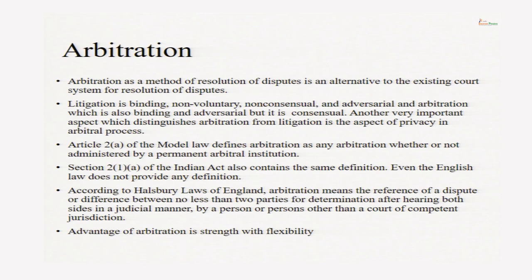Before anything, let us understand what we mean by arbitration. UNCITRAL Model Law Article 2(a) defines arbitration as 'arbitration means any arbitration whether or not administered by a permanent arbitral institution.' So again, there is no real definition here — it is only a classification. It only tells me that there can be two kinds of arbitration: one administered by a permanent arbitral institution, and one not administered by any permanent arbitral institution.